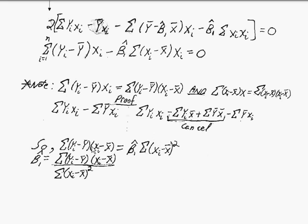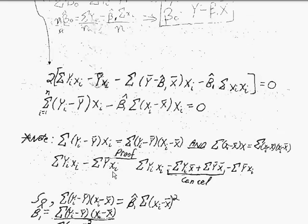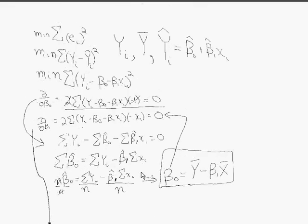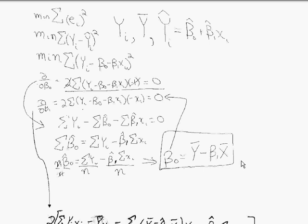That gives us our formula again: the slope is y_i minus y-bar times x_i minus x-bar, sum of those, divided by x_i minus x-bar squared, sum of those. And the y-intercept is y-bar minus the slope times x-bar.